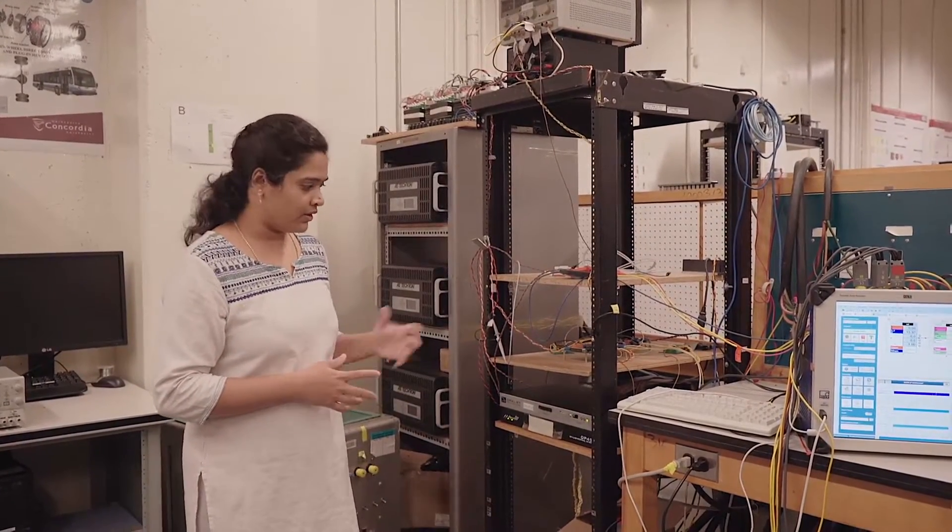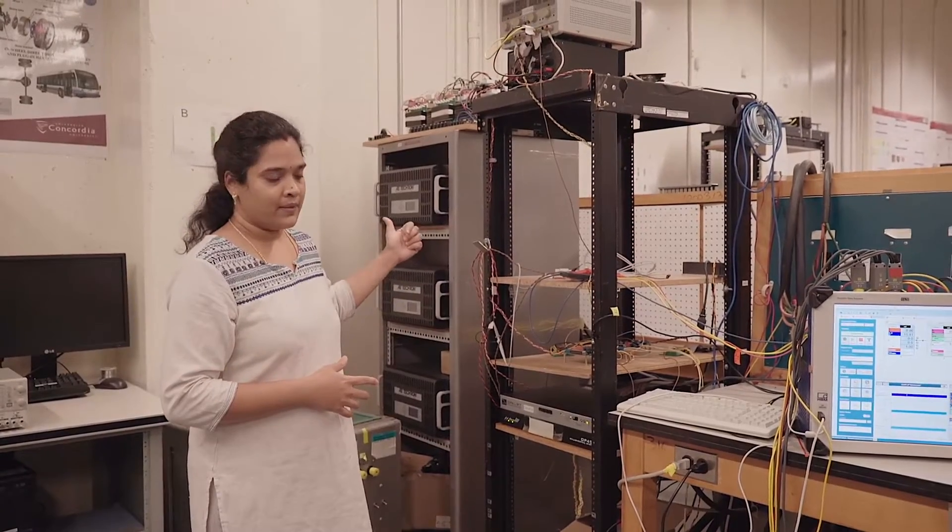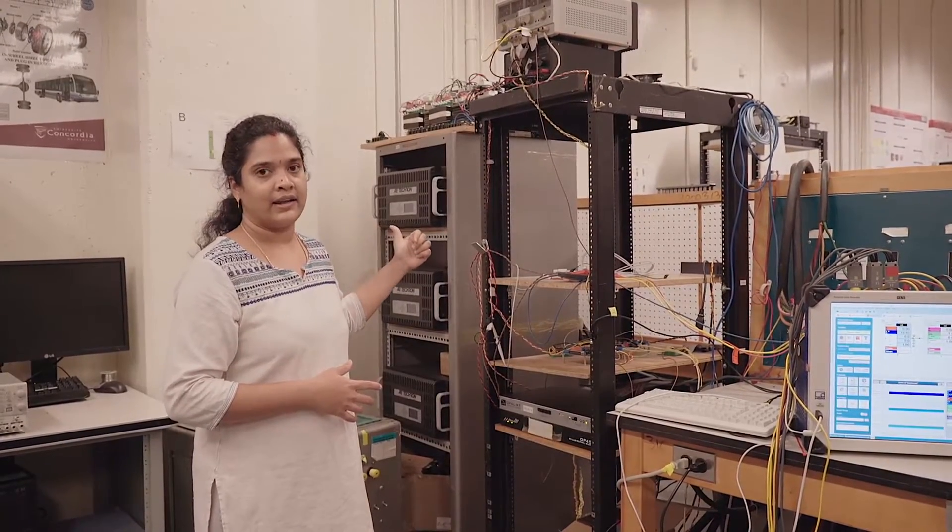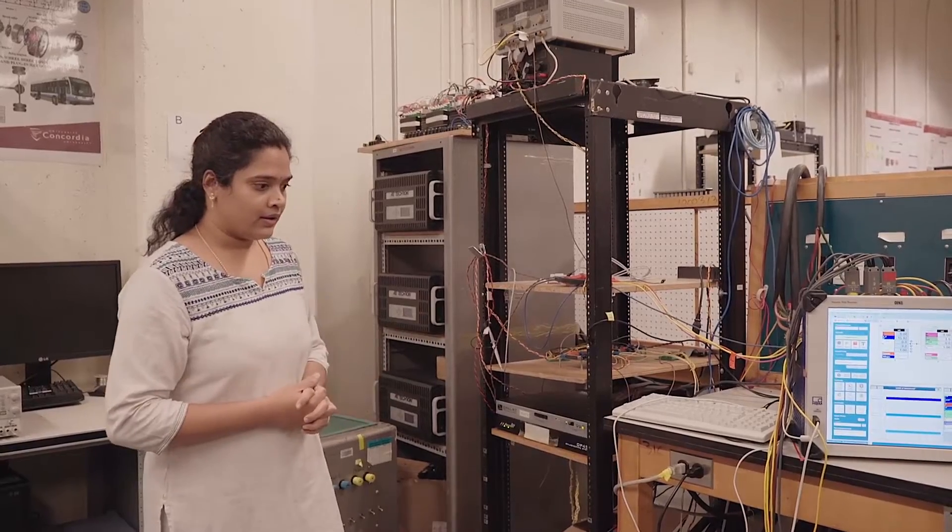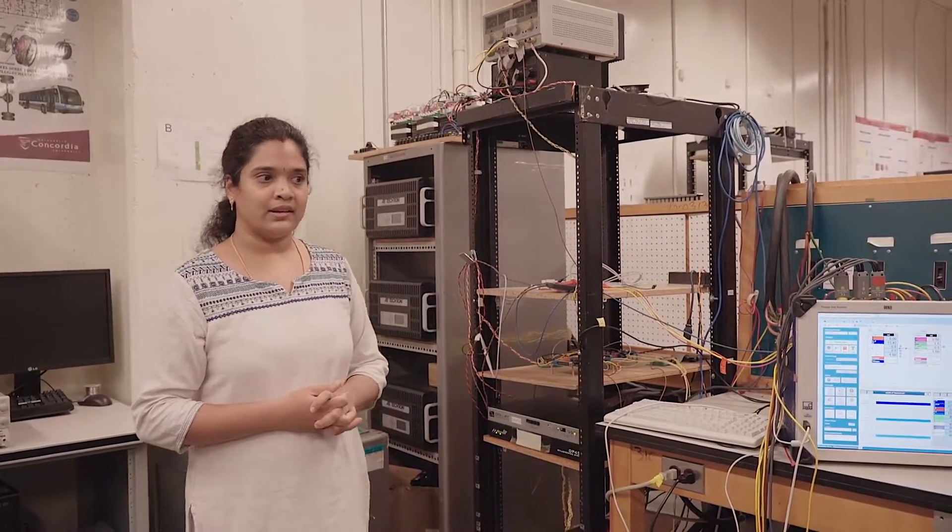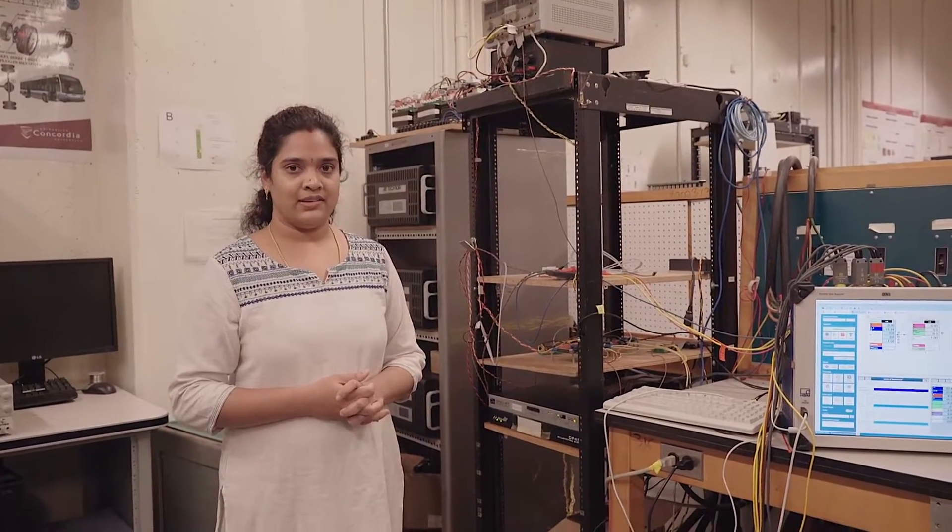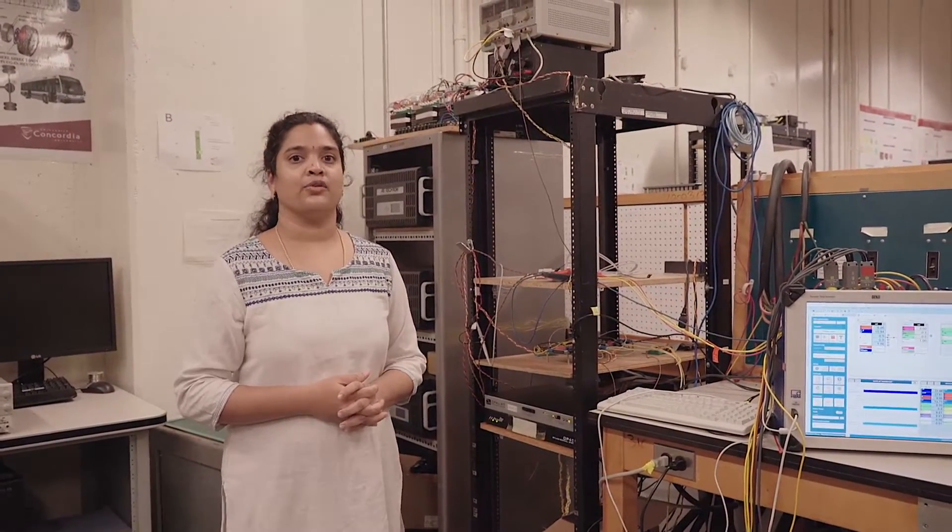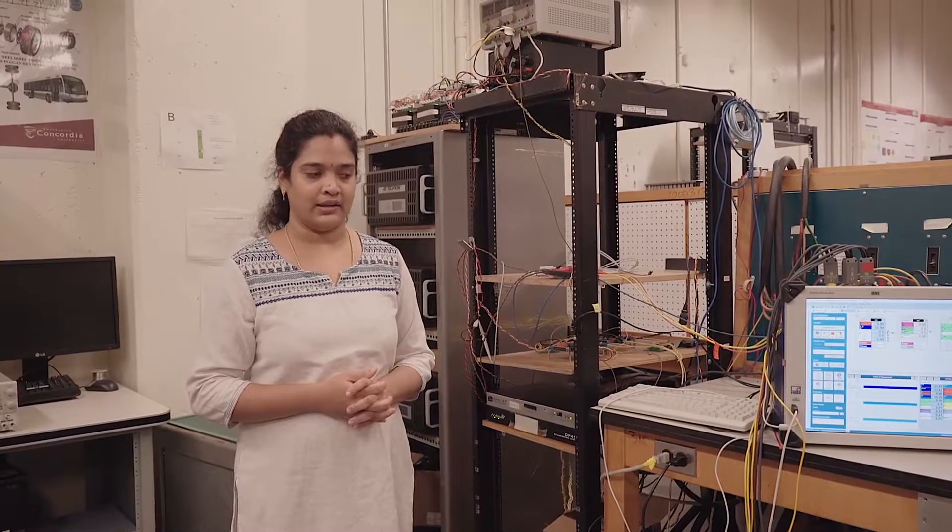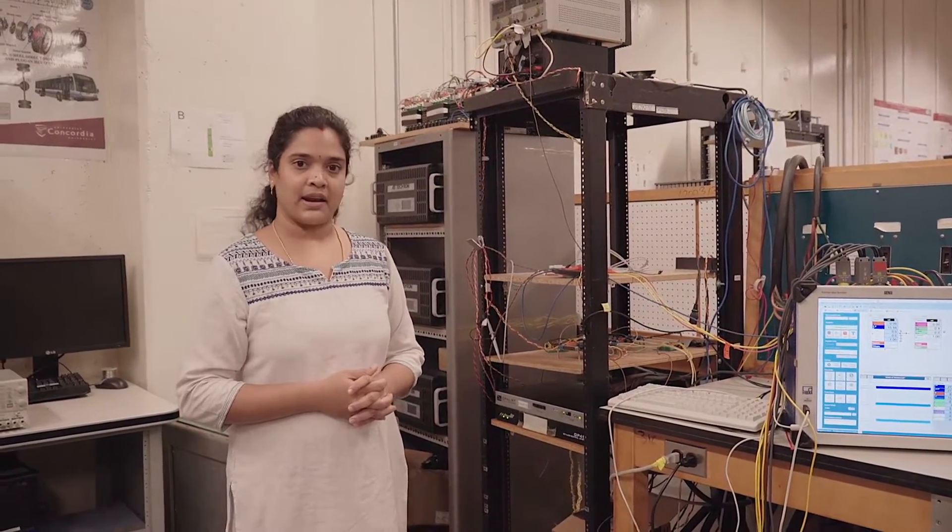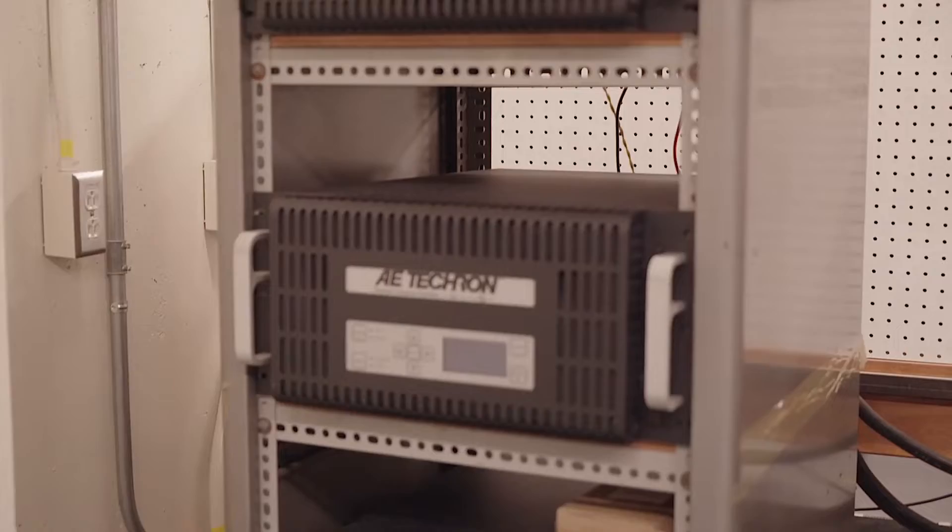This Opal RT is going to give control signals to the linear amplifier to behave exactly like a real induction machine. Here what I am doing in this setup is I am basically emulating some grid transients like short circuit faults and the open circuit faults in the grid and I am emulating the transients how the motor behaves to such transients.